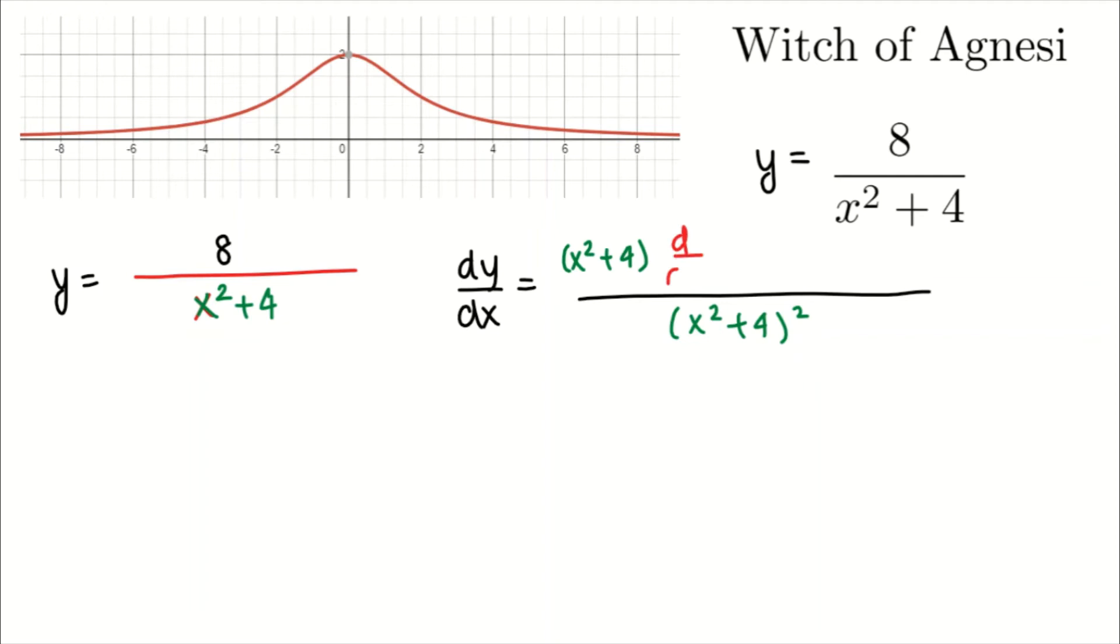So you will have d over dx of 8, minus, now you just switch the roles. So you will now have d over dx of x squared plus 4, multiplied by the numerator itself, so the number 8.